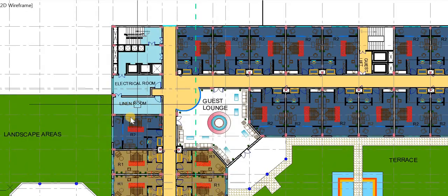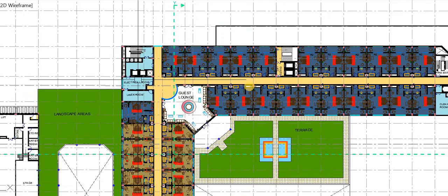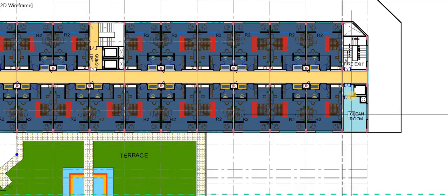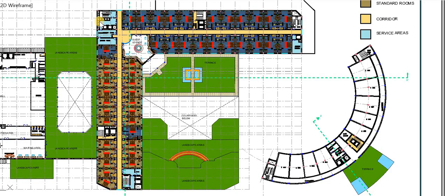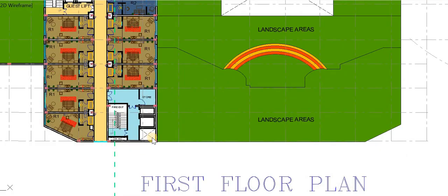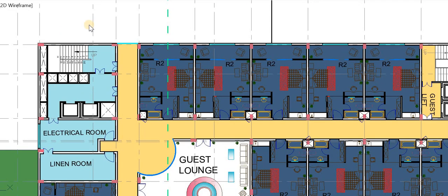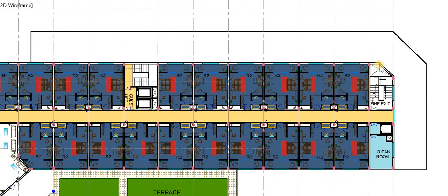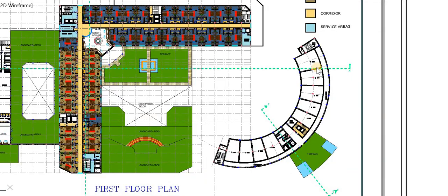Each floor of the hotel block has been designed with back-of-house services such as the dining room, electrical room, and clean room. The entire hotel block has been designed with three fire exits in case of fire emergency. One fire exit is on the front of the hotel block, one is in the middle, and the last fire exit is on the end corner of the hotel block.